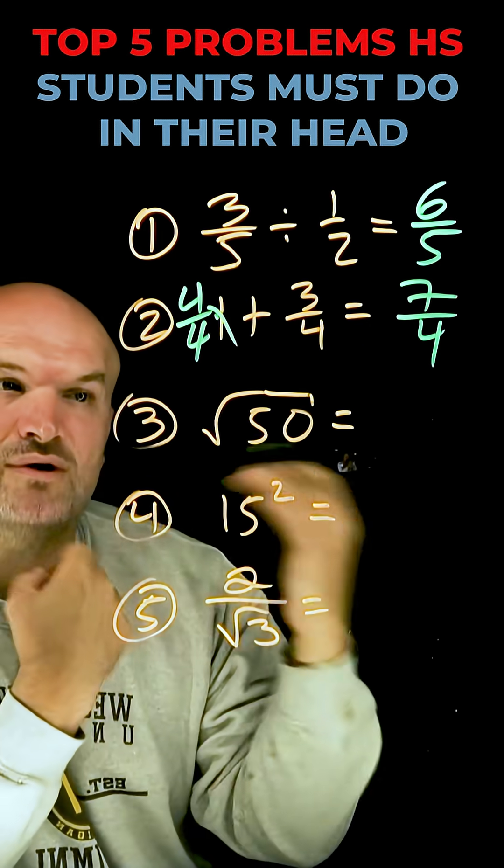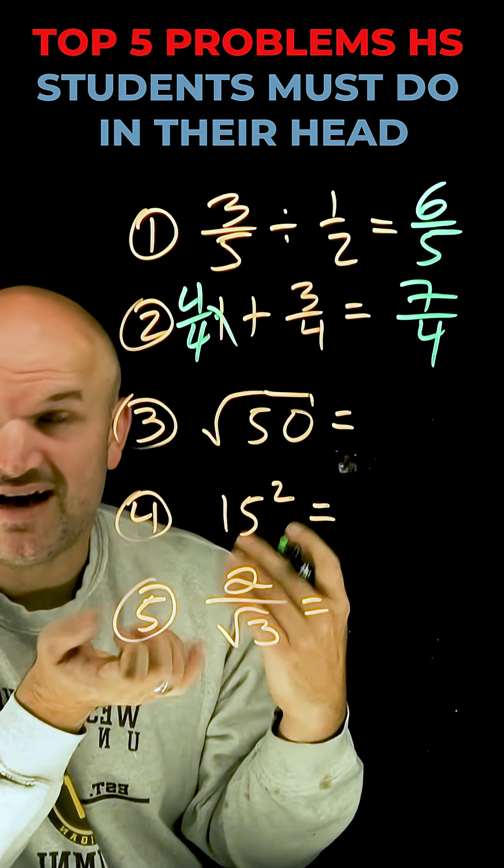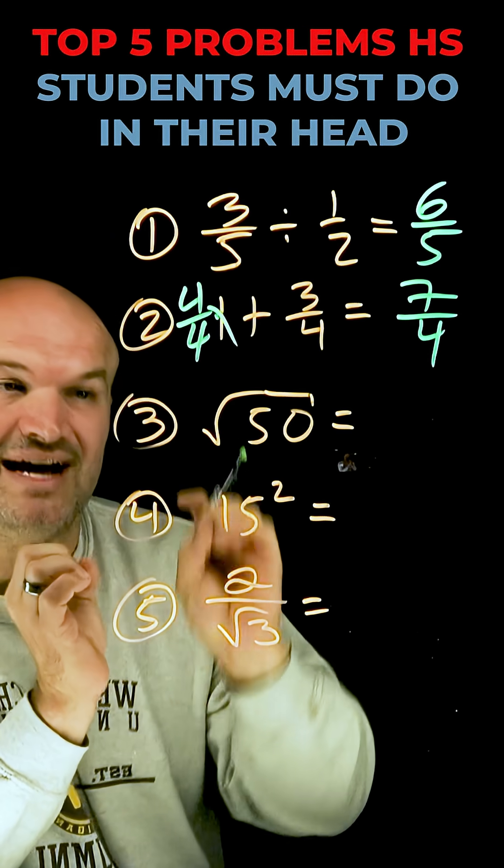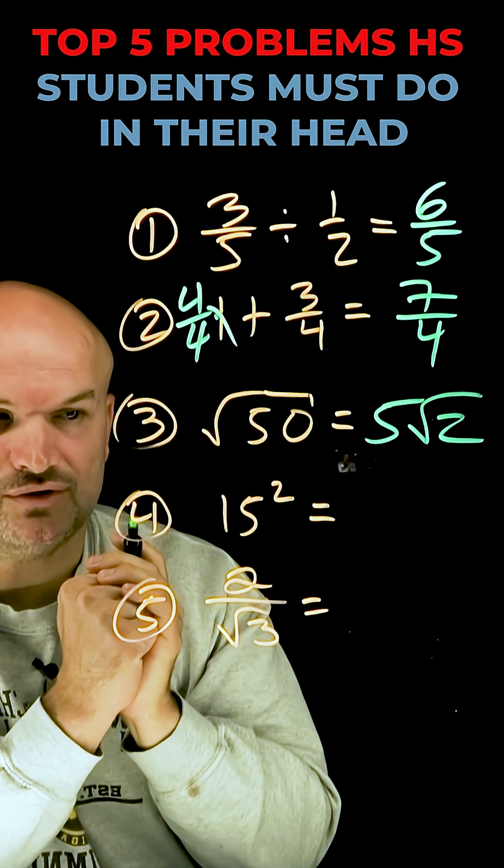When simplifying a radical, we always want to look for what is the largest square number that evenly divides into 50. That answer is 25. 25 goes into 50 two times. I can take the square root of 25. I cannot take the square root of two. The square root of 25 is five, and two remains under the radical.